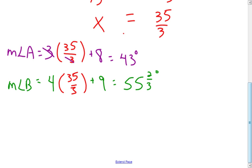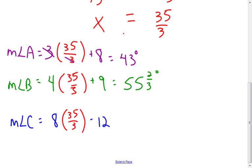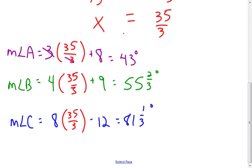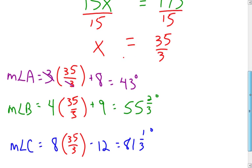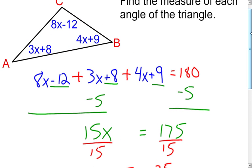Last but not least, the measure of angle C, which is 8x minus 12: 8 times 35 thirds, minus 12. Again the fractions don't work out as nicely, but it comes out to 81 and 1 third degrees. We could also have added the measures of angle A and angle B together and subtracted from 180 degrees — we still would have ended up with 81 and 1 third degrees. That's another example of using the triangle angle sum theorem to calculate three angles when given in terms of x.